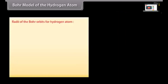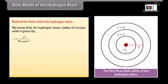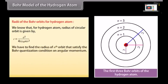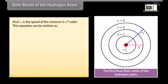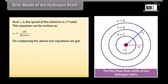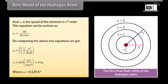Radii of the Bohr orbits of hydrogen atom: For hydrogen atom, the radius of a circular orbit is given by R = E²/(4πε₀MV²). Applying Bohr's quantization condition on angular momentum, Ln = MVnRn = Nh/2π, where n = 1, 2, 3, ... and Vn is the speed of the electron in the nth orbit. From these two equations, the velocity and radius of the nth orbit are: Vn = (1/n) × E²/(2ε₀h), and Rn = n² × h²ε₀/(πME²) = n²a₀, where a₀ = 0.529 Angstrom.